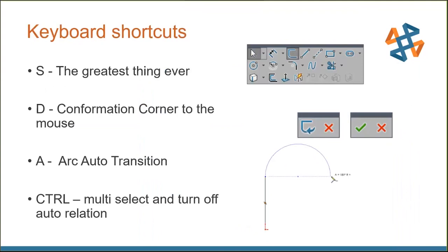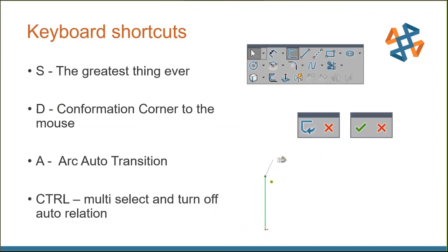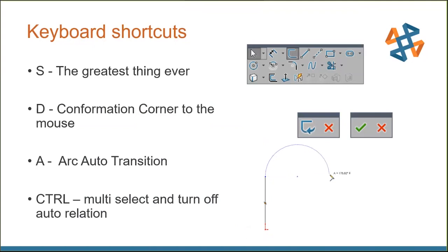A few keyboard shortcuts you'll see when I sketch: the S key opens the shortcut toolbar — a customizable palette for sketches, parts, assemblies, and drawings. The D key brings the confirmation corner right to the mouse. The A key transitions automatically from lines to arcs, and you can hit A again to reverse direction. The Control key is used to multi-select sketch entities to add a relationship, and also when actively creating a sketch entity it turns off automatic relations and automatic snapping behavior.